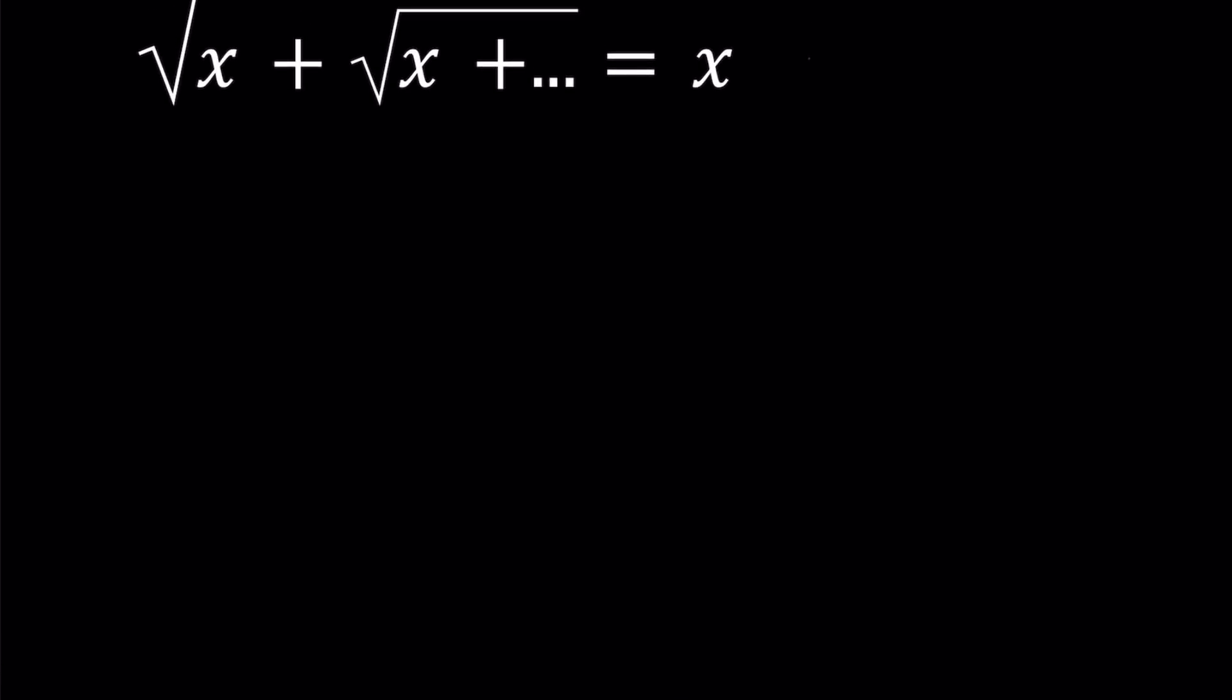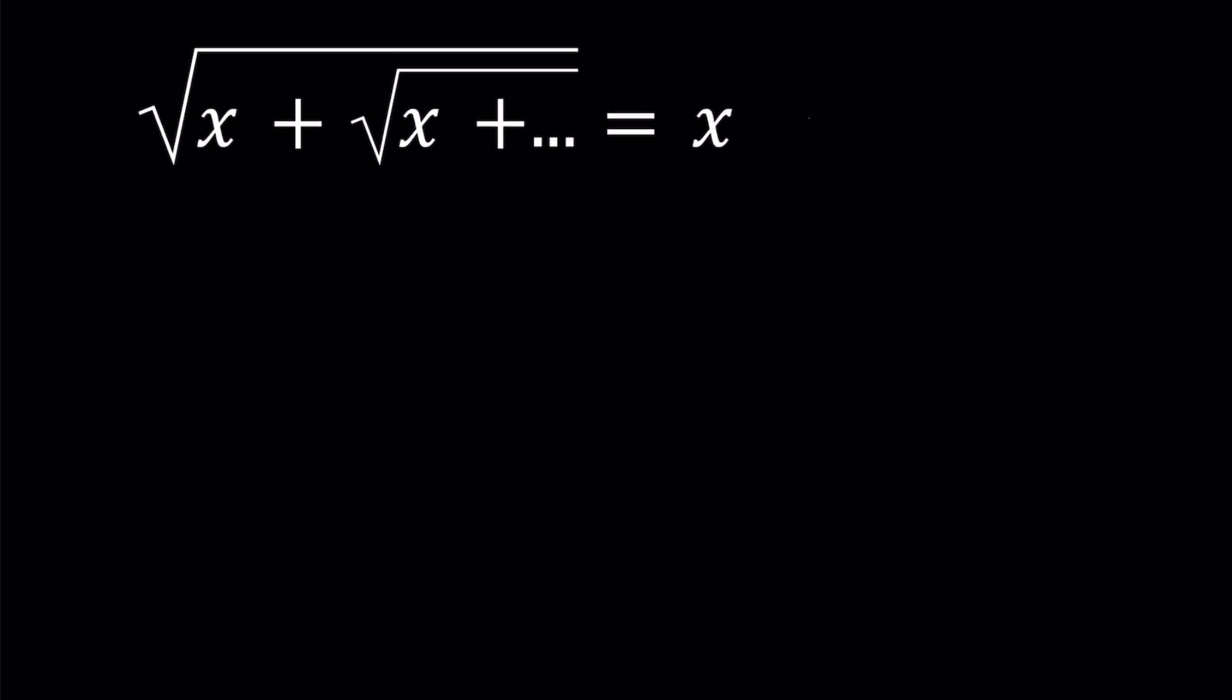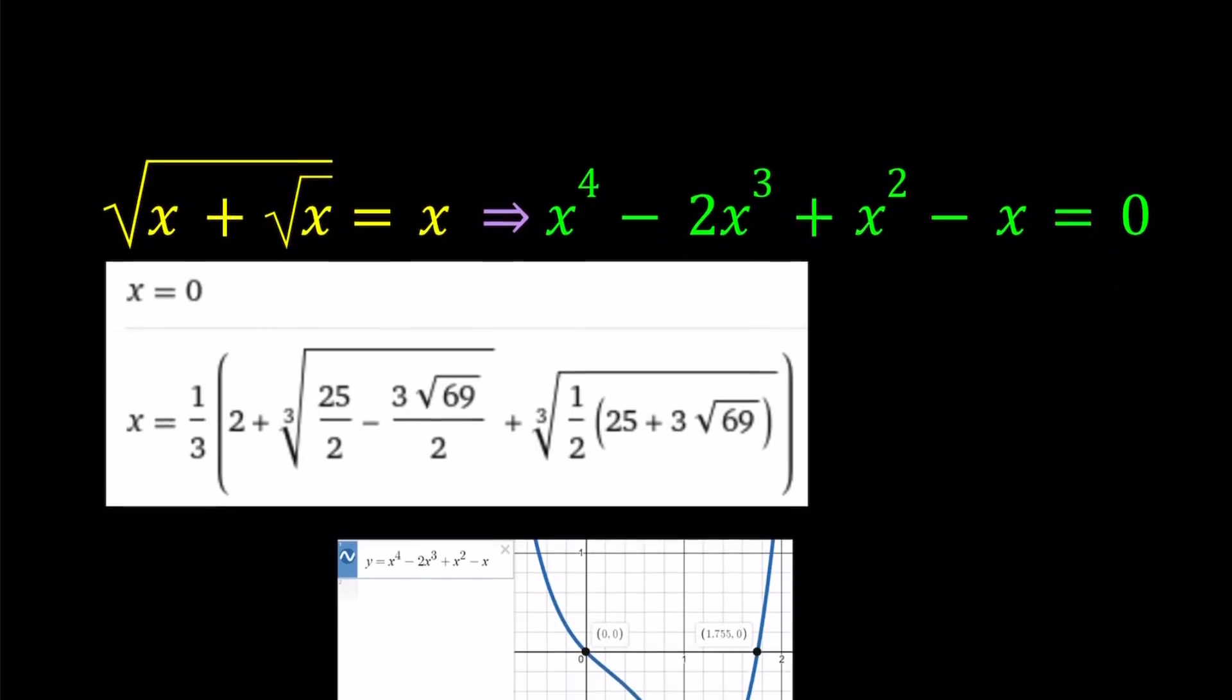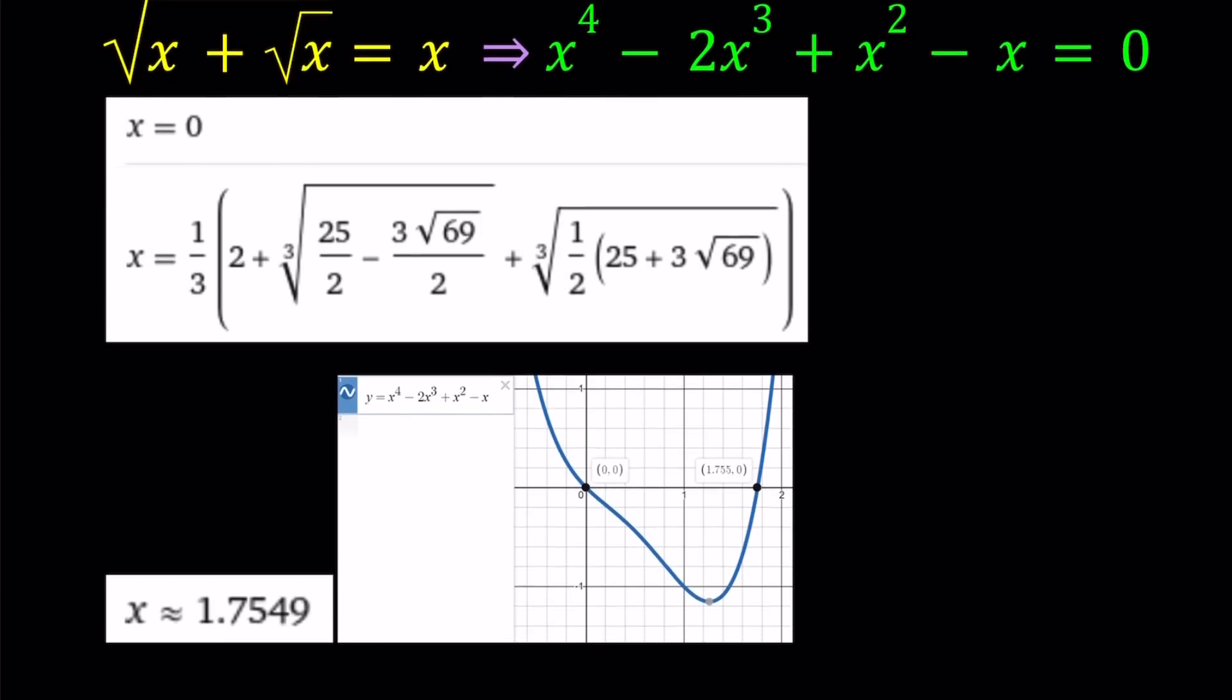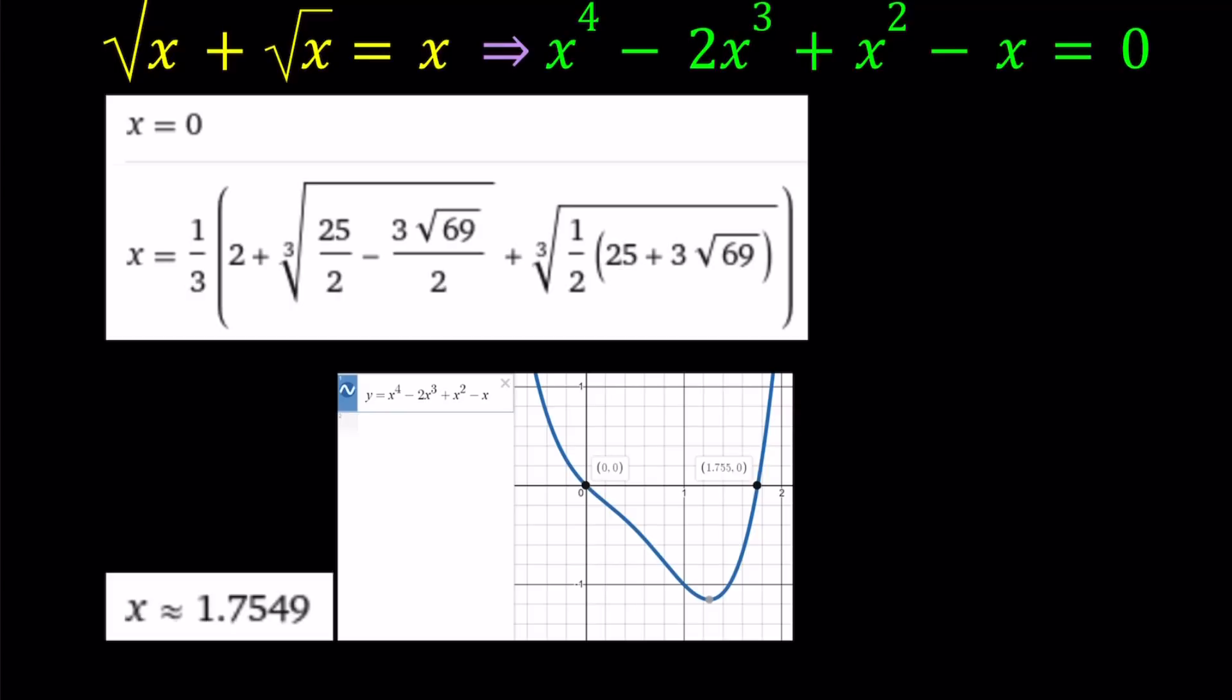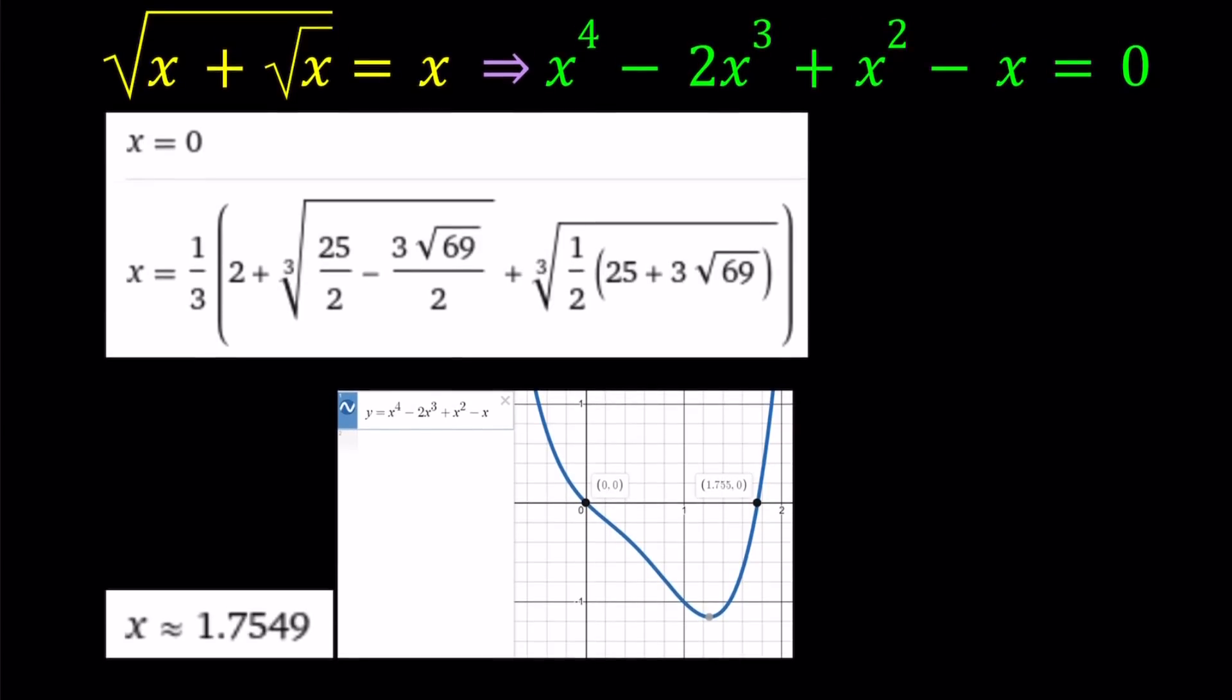So I'm going to show you a couple of things before we proceed with the solution. And I'll be presenting two methods, at least. What happens if we only have two x's and two radicals? Then this equation, even though it looks pretty simple, when you work it out, you're going to end up with a quartic equation. And if you solve this quartic equation, you get a really interesting solution with lots of cube roots. Approximately, it is 1.7549. And you can see the graph of the quartic. It has two x intercepts, one of which is x equals zero. And the other one is the solution that we're looking for.